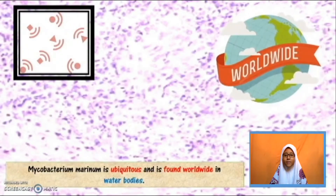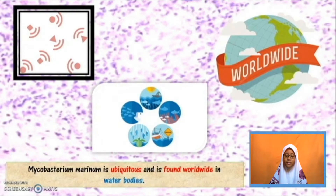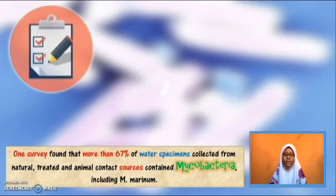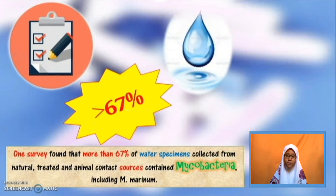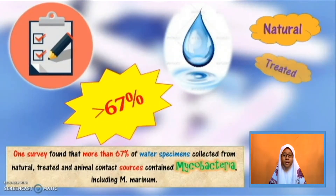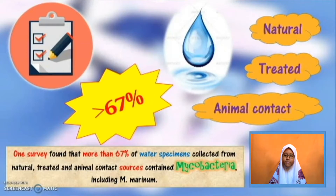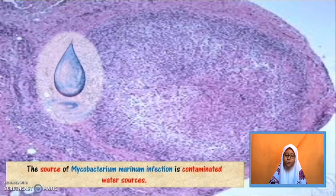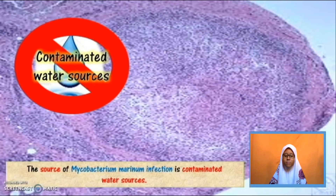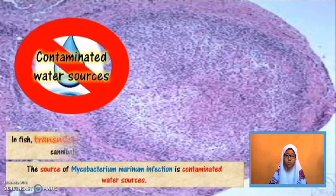Mycobacterium marinum is ubiquitous and is found worldwide in water bodies. One survey found that more than 67% of water specimens collected from natural, treated and animal contact sources contain mycobacteria including Mycobacterium marinum. So the source of Mycobacterium marinum infection is contaminated water sources.